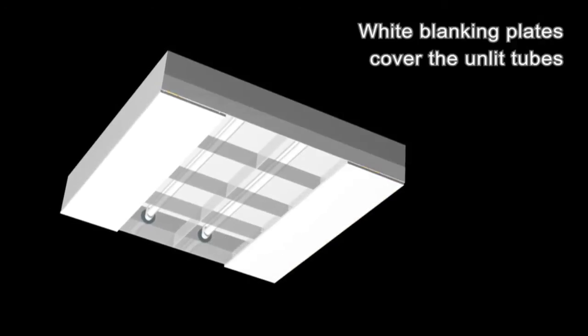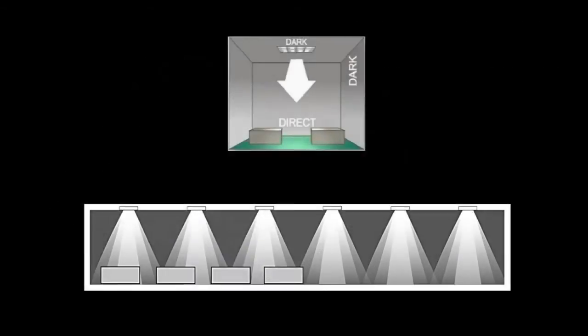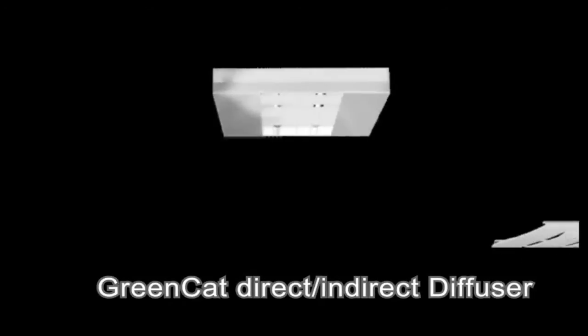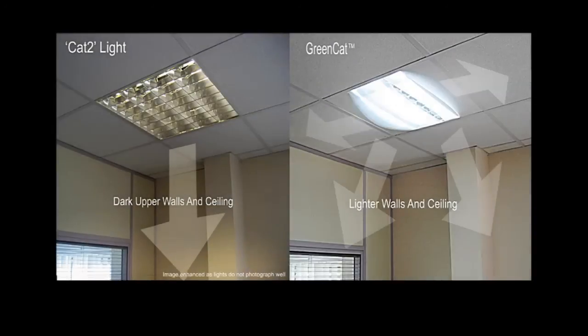But light fittings with Cat2 louvers are notorious for creating glare directly below the lights. That's why we designed the green cap diffuser system. A low-cost extra, this harmonizes the light across the room.